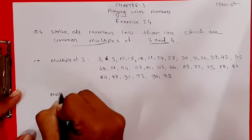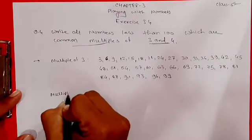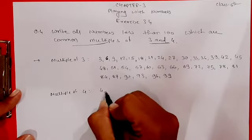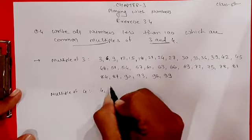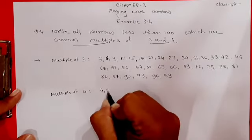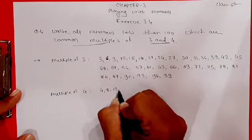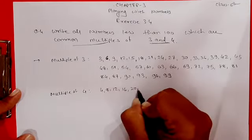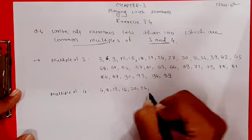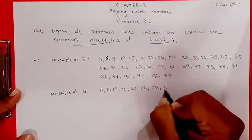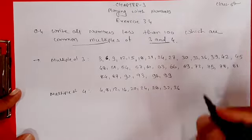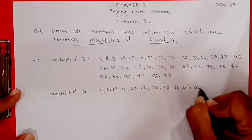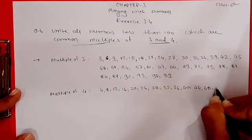Next, let's find multiples of 4. The table of 4: 4, 8, 12, 16, 20, 24, 28, 32, 36, 40, 44, 48.